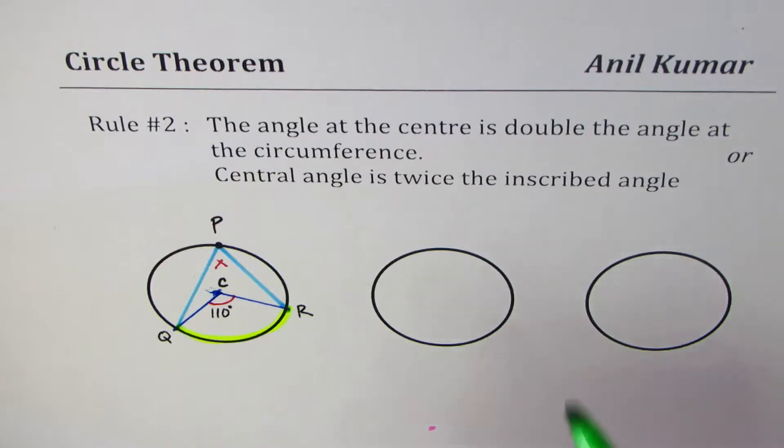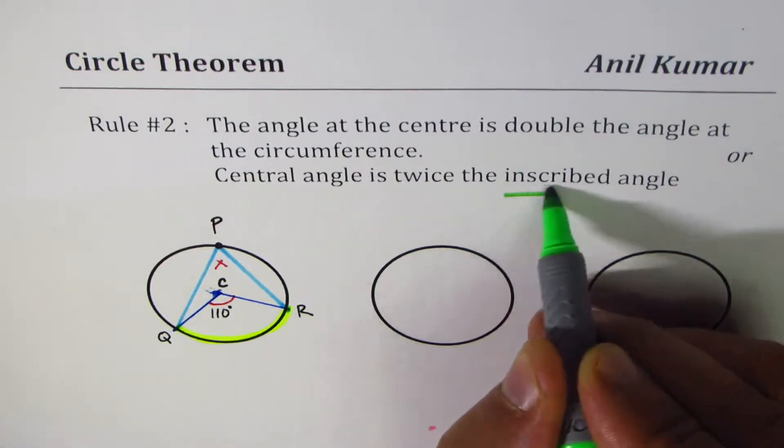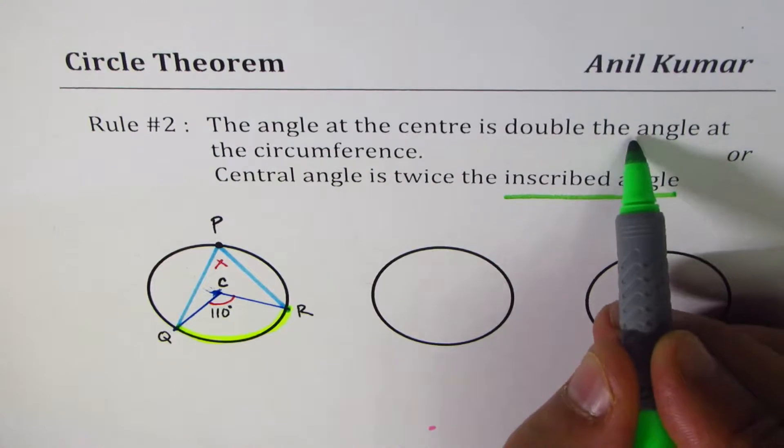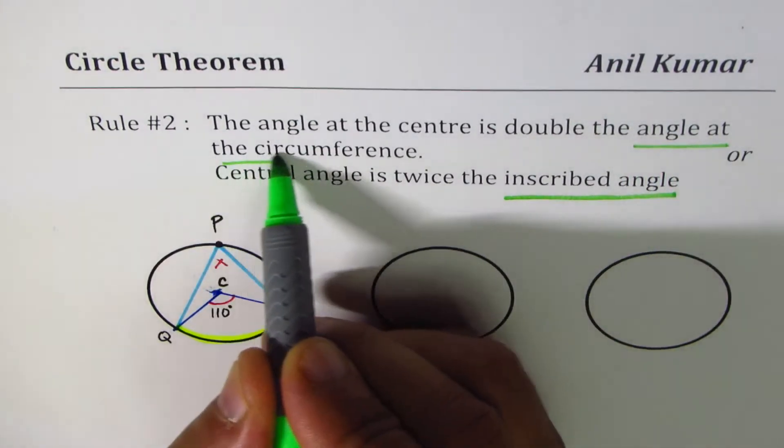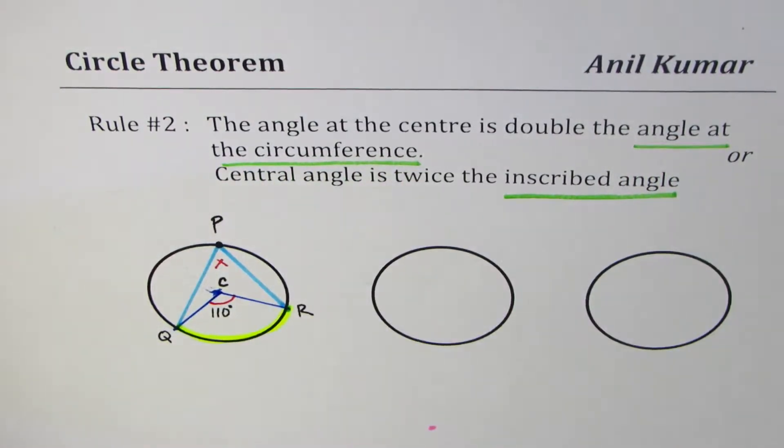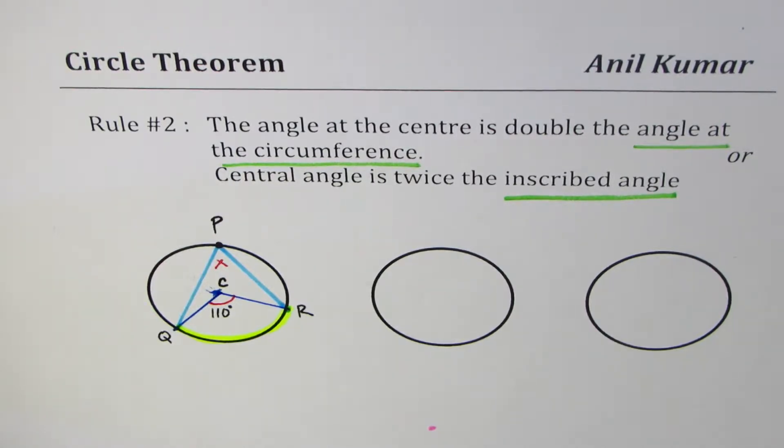So I've used two terms here. One is the inscribed angle, one is angle at the circumference. So your questions may have similar wordings. Both mean the same thing. Let's understand them first.